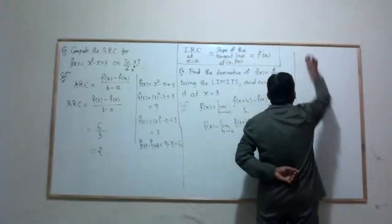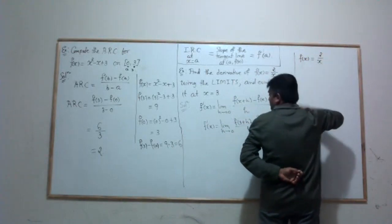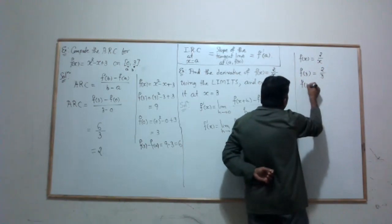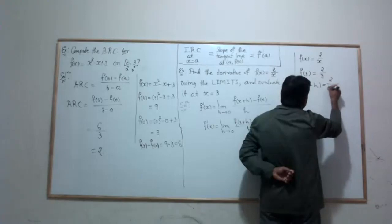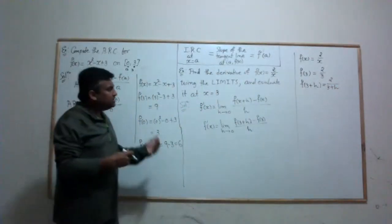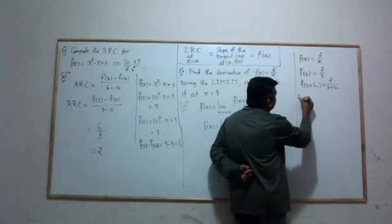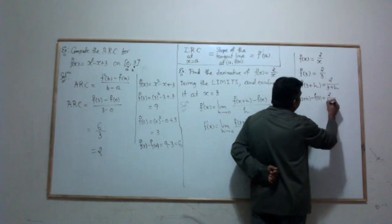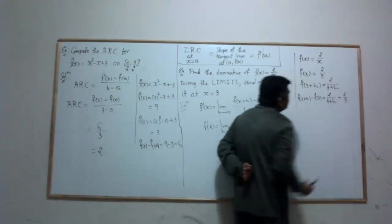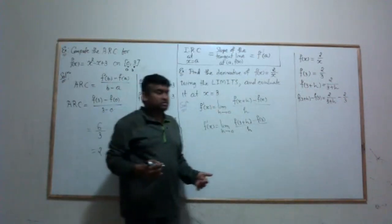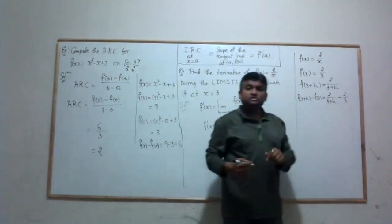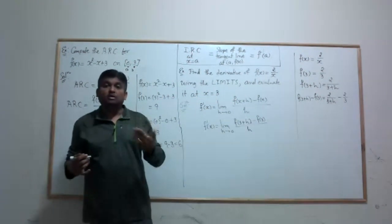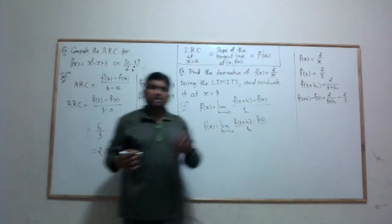f(x) = 2/x, so f(3) = 2/3 and f(3+h) = 2/(3+h). The difference f(3+h) - f(3) = 2/(3+h) - 2/3. To handle these rational expressions, find the common denominator, which is 3(3+h). Making it visible: the numerator becomes 2·3 - 2(3+h) = 6 - 6 - 2h = -2h. So the difference simplifies to -2h / [3(3+h)].